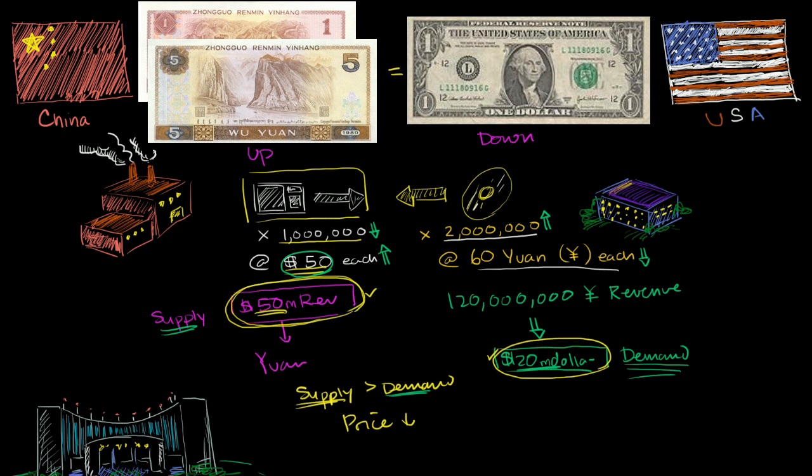But let's say that the Chinese central bank does not want that to happen. So this is the People's Bank of China. They do not want the currency, the Chinese currency, to strengthen.